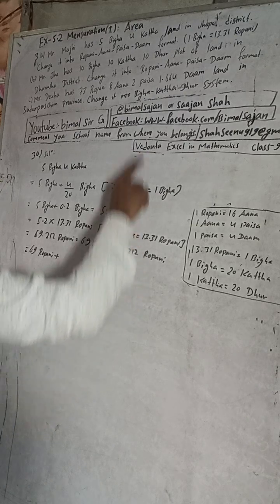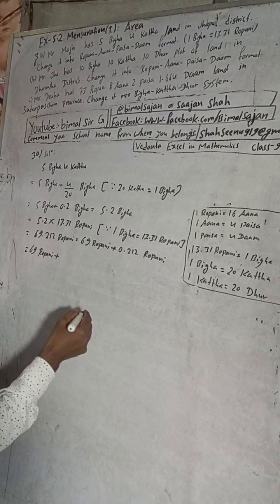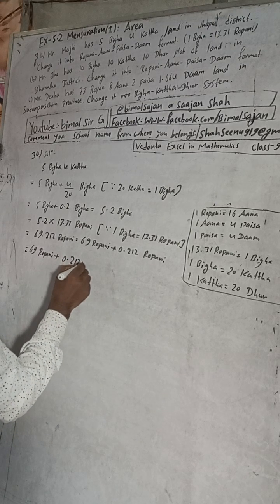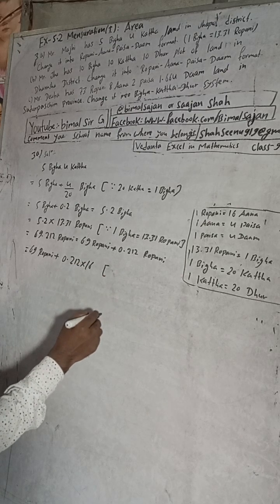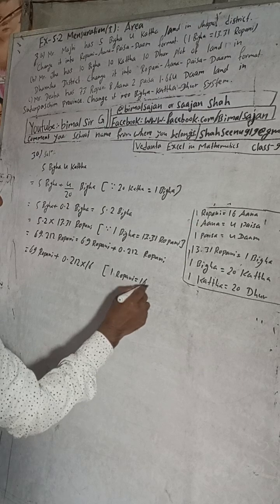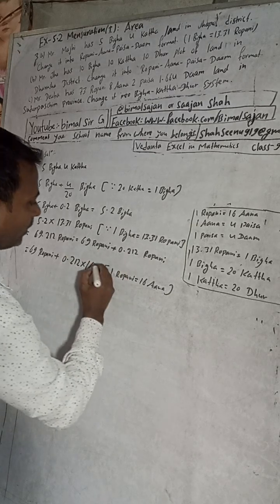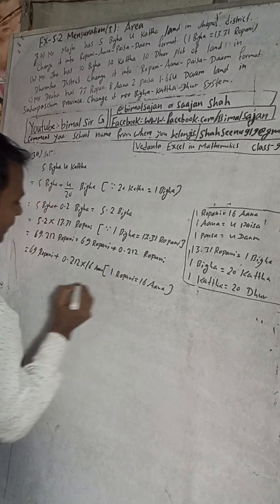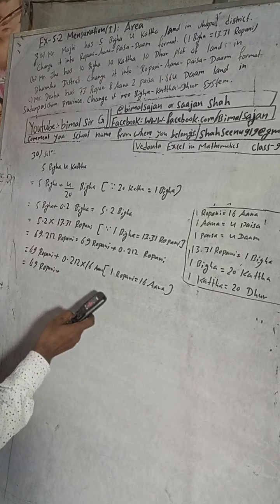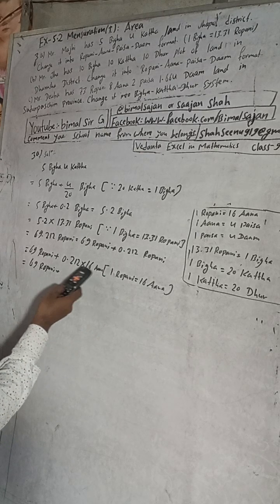Now we need ana. To change 0.212 ropani into ana, we multiply by 16, because 1 ropani is equal to 16 ana. So we multiply 0.212 into 16.